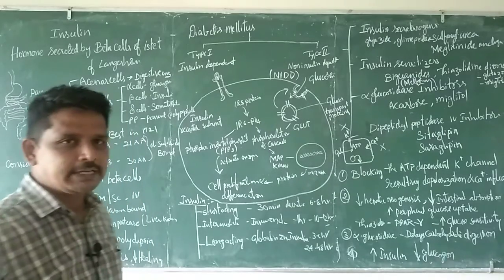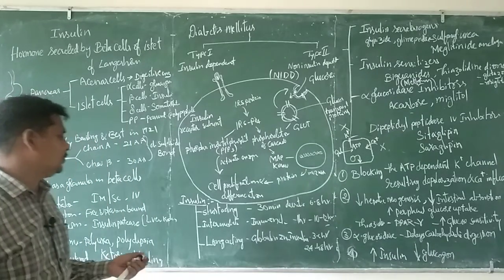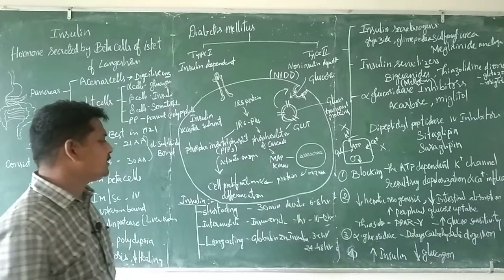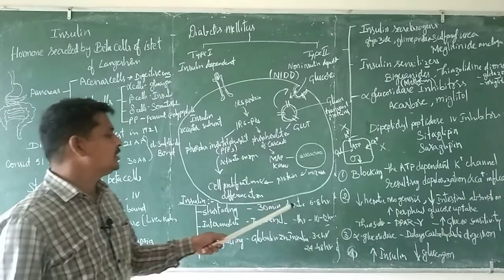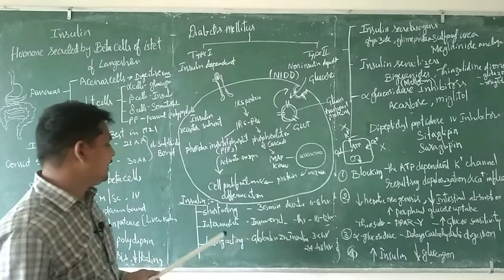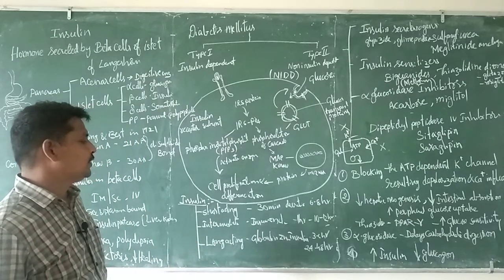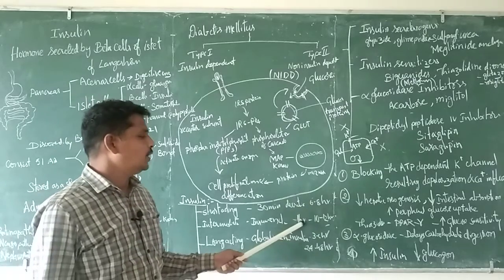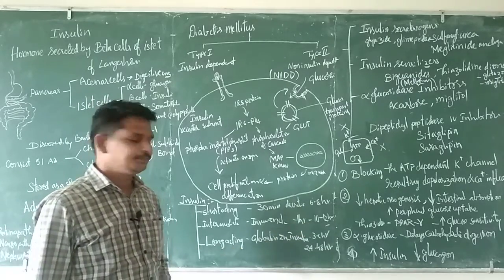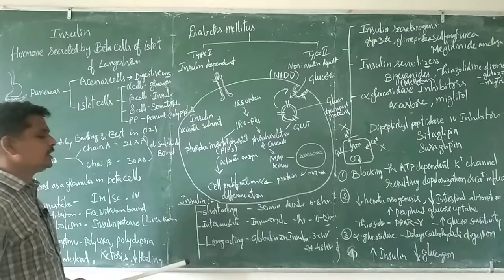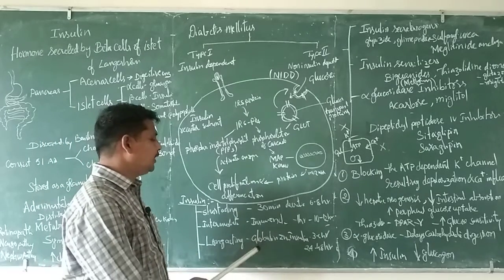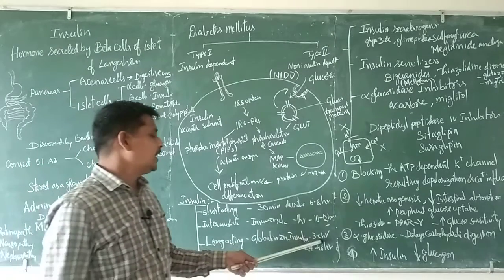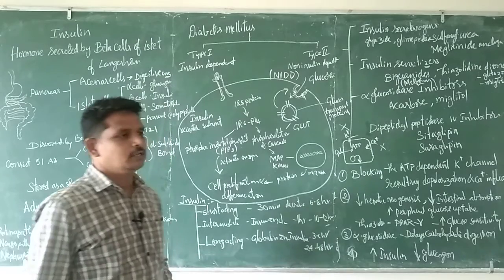Depending on the duration of action, insulin can be categorized into: short-acting (plain insulin), with onset of action of 30 minutes and duration of 6 to 8 hours; intermediate-acting insulin, which is an insulin and zinc chloride combination with onset of 1 hour and duration of 10 to 12 hours; and long-acting insulin, a combination of the protein globulin, zinc, and insulin, with onset of 3 to 6 hours and duration of 24 to 48 hours.